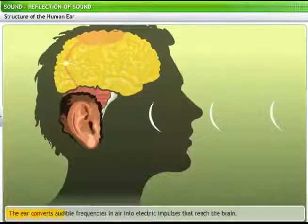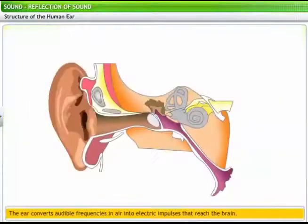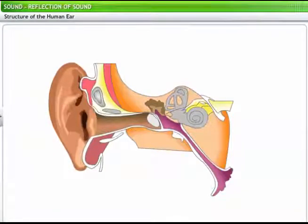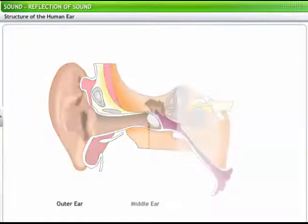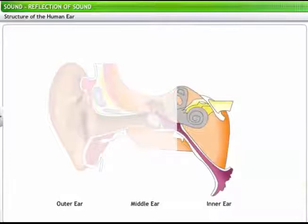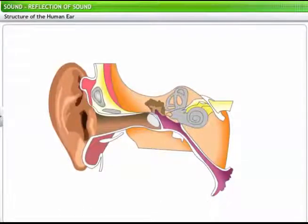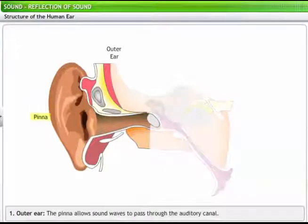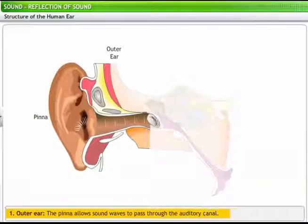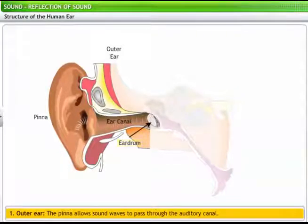The human ear is categorized into three main parts: the outer ear, middle ear, and the inner ear. Let's see how these parts work together to produce the sensation of hearing. The outer ear, called the pinna, allows sound waves to pass into the ear through the auditory canal. At the end of this canal is the eardrum or the tympanic membrane. When a compression or rarefaction reaches the eardrum, it pushes or pulls the eardrum inward or outward respectively, due to the pressure on the outer side of the membrane.